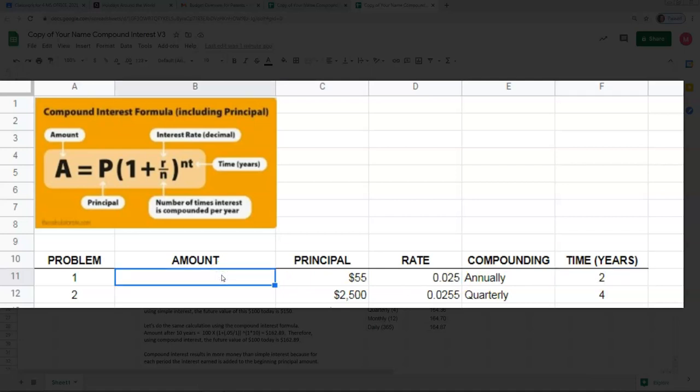So to create the first one, once again we start with the equal sign. We can click directly on the principle rather than typing it in. So this is P, principle, multiplied by 1 plus R over N. So we need to multiply, we need our parenthesis, 1 plus, and then we need to put in parenthesis this calculation for rate divided by the number of compounding periods per year.